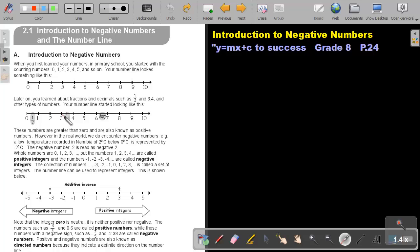And 3.4. 3.4 will be between 3 and 4, and a little bit closer to 3. And other types of numbers. Your numbered line starts looking like this. These numbers are greater than 0, and are also known as positive numbers.